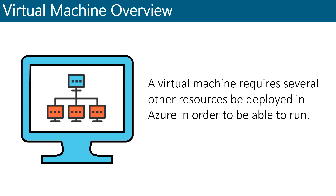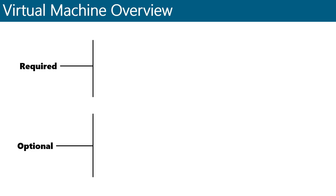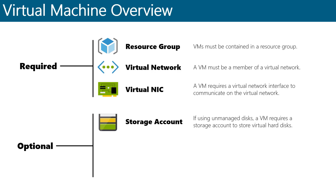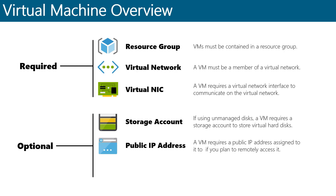A VM in Azure requires several other resources to be deployed in order to run. When you deploy a VM, if these resources don't already exist, they'll be created for you. The necessary resources include a resource group, a virtual network, and a network interface. If you configure VM diagnostics, you'll also need a storage account to house them. If you plan to make your VM remotely accessible outside the internal network, you'll also need a public IP address. And if you plan to store data or applications on your VM, you'll also need to deploy and attach at least one data disk.